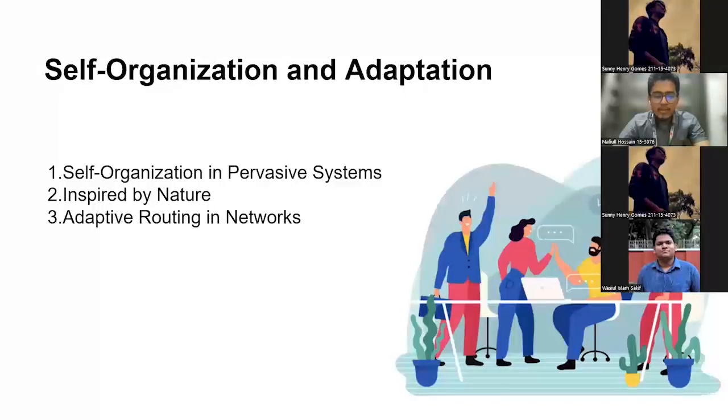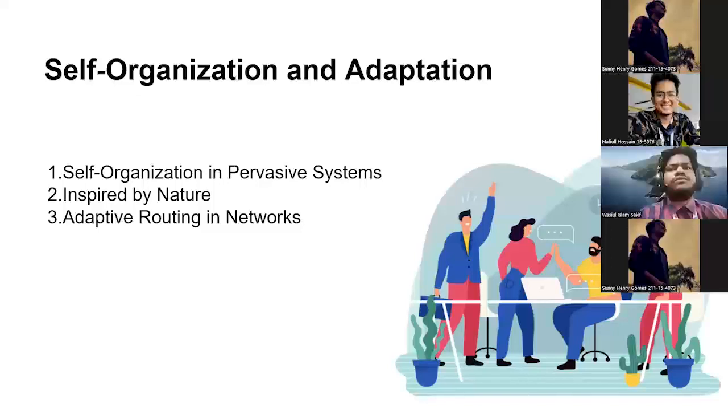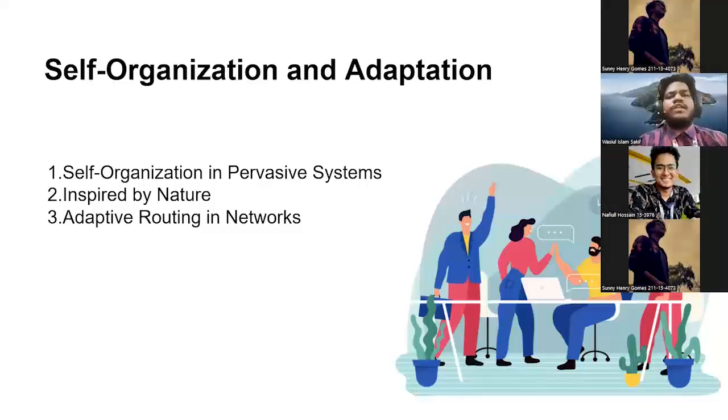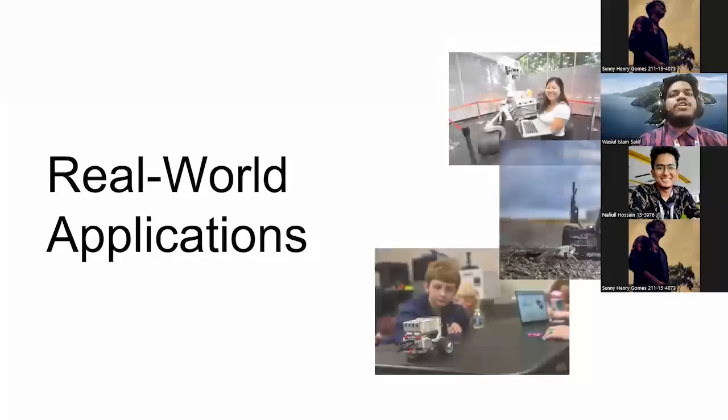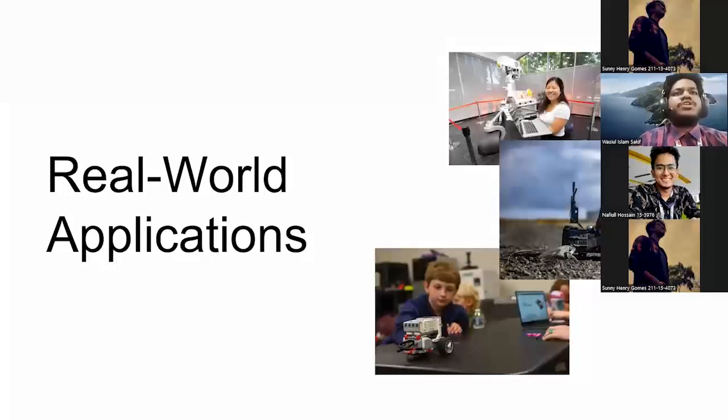For instance, adaptive routing protocols in pervasive networks dynamically select optimal paths based on network conditions or traffic patterns. Thank you, now my friend Waslam will continue. Assalamu alaikum sir, my name is Md Waslam, my student ID is 211154047. I'm going to continue the presentation. Real world applications exemplify the application of the evolutionary approach in pervasive computing.